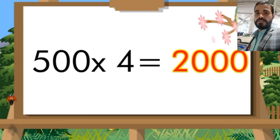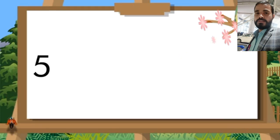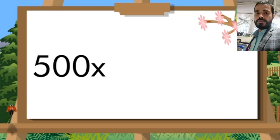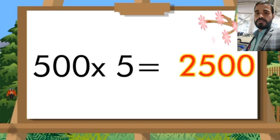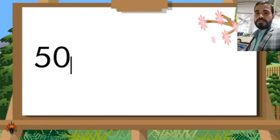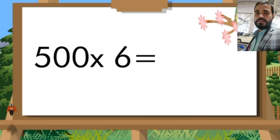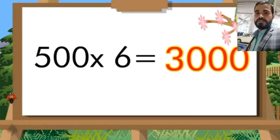Five hundred fives are two thousand five hundred. 500 sixes are three thousand.